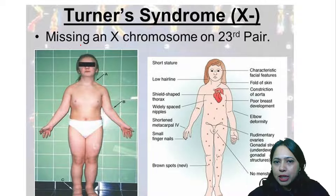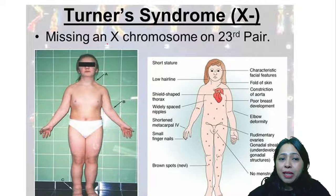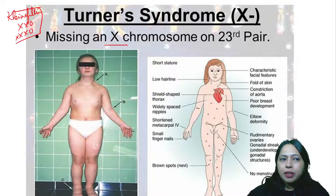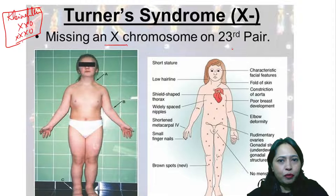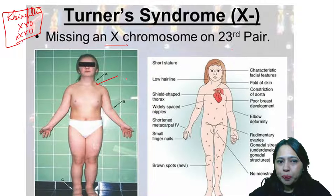Here we have Turner's syndrome. This is one step less than being a female - there is a missing X chromosome. In Klinefelter's syndrome, there is an extra X chromosome, so it will be double XX or three times X. But in Turner's syndrome, in the same pair of chromosomes, you have one X missing. One of the most important features of Turner's syndrome is the webbed neck - the moment you see the webbed neck, you should identify this as Turner's syndrome.